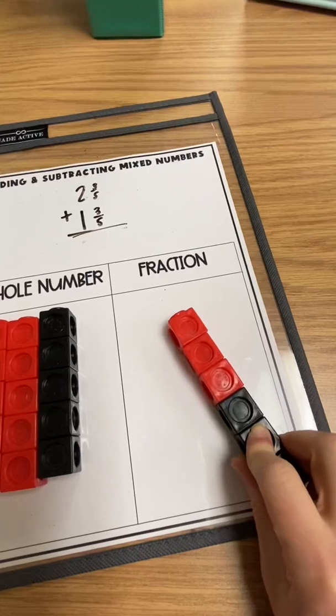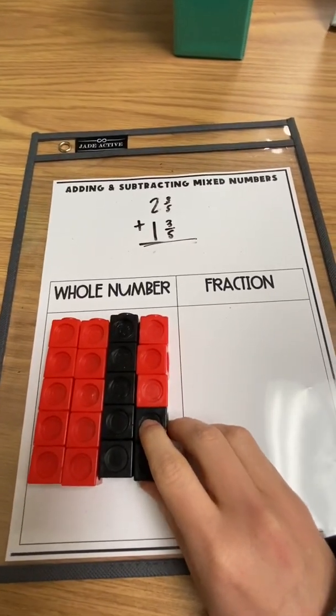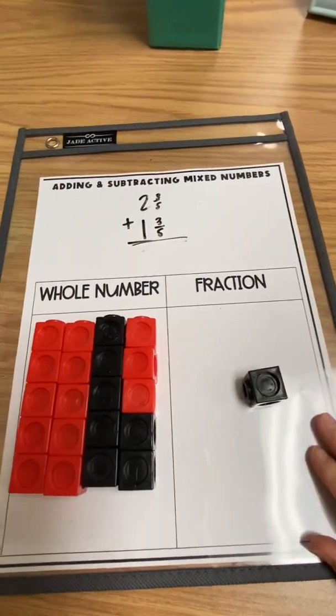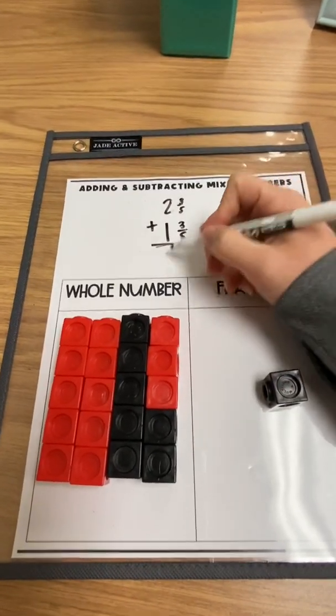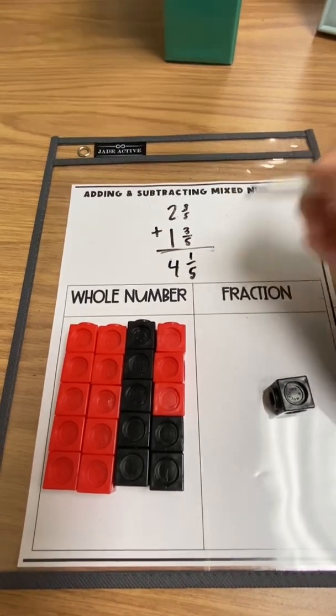So they're going to break that hole into 5 5ths. And they're left with the 1 5th. So they're able to see that 2 and 3 5ths plus 1 and 3 5ths is 4 and 1 5th.